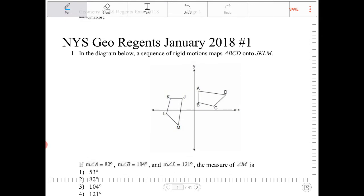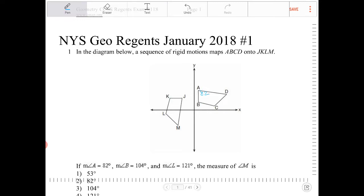If angle A is 82 degrees, so angle A is 82, angle B is 104, angle L is 121. Let me do a little better job of labeling that, 121.